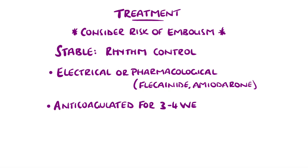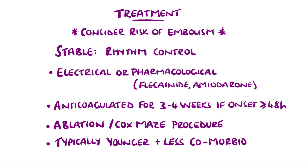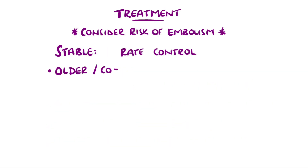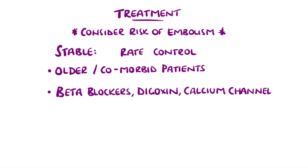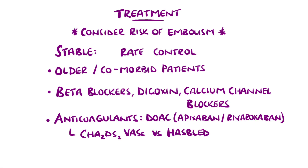If the atrial fibrillation started more than 48 hours beforehand, then patients will be treated with anticoagulation for several weeks prior to the cardioversion. Ablation or surgery such as the Cox-Maze procedure, where a maze is created to contain the abnormal electrical activity, are other options. This strategy is used mostly in younger people who are more likely to maintain sinus rhythm. Rate control is used mostly in patients who are unlikely to maintain sinus rhythm, such as older or comorbid patients. Beta blockers, digoxin or calcium channel blockers are the most common agents used. Patients receiving rate control should also receive lifelong anticoagulation to reduce the risk of embolic complications. Direct oral anticoagulants like apixaban and rivaroxaban are now opted for more commonly than warfarin, and scores such as CHA₂DS₂-VASc and HAS-BLED, and more recently ORBIT, are used to compare the relative risk of stroke against the risk of bleeding.